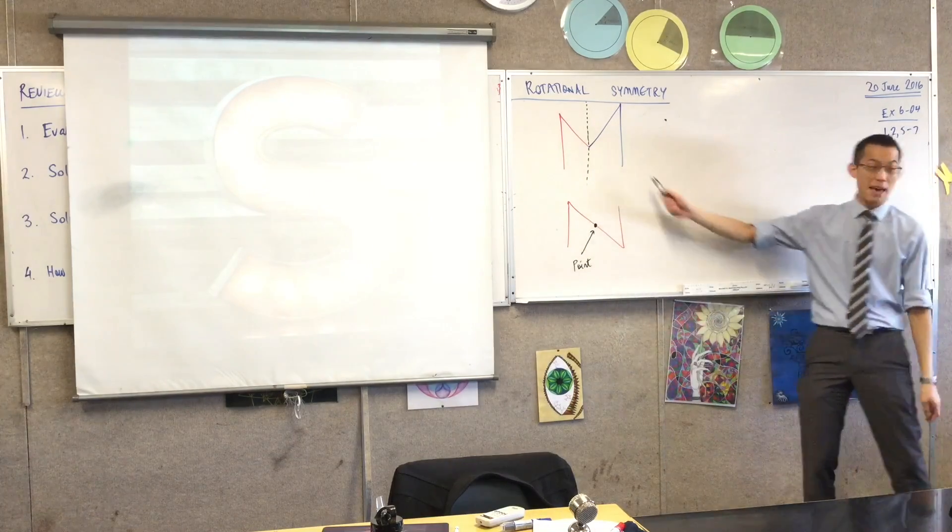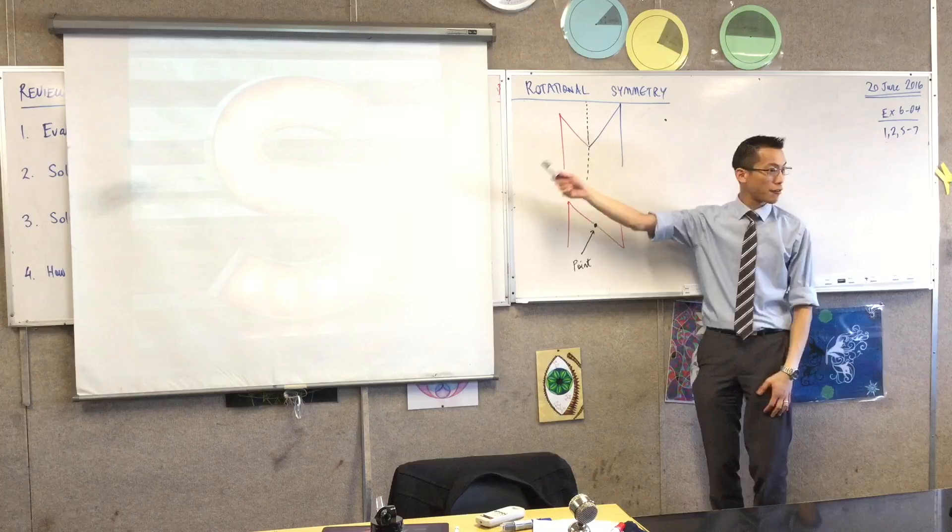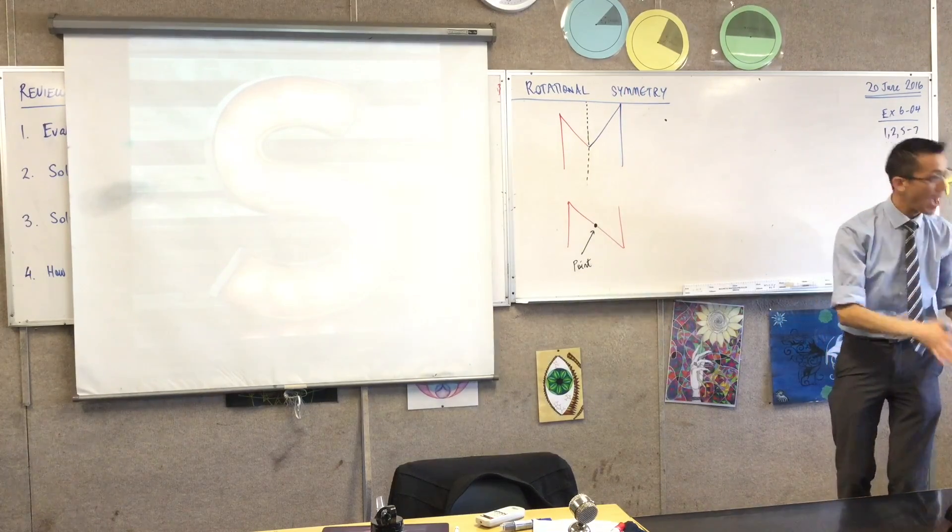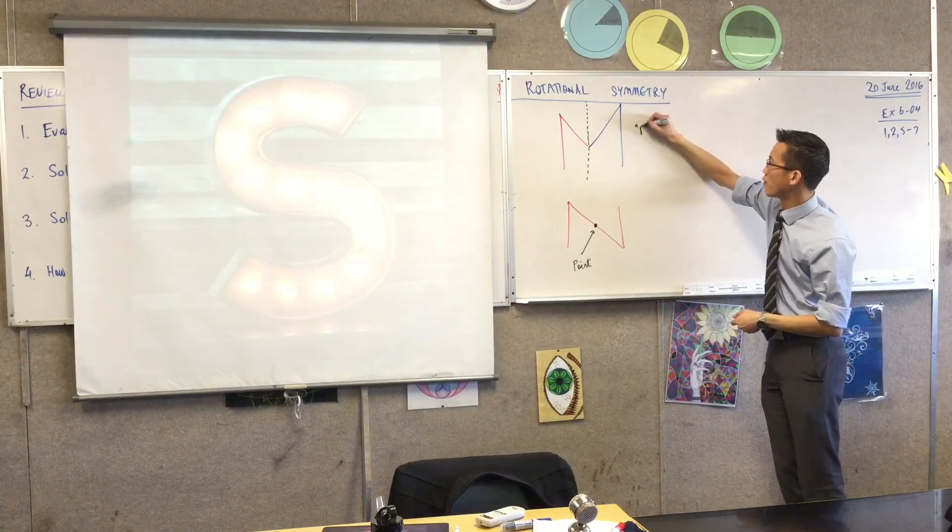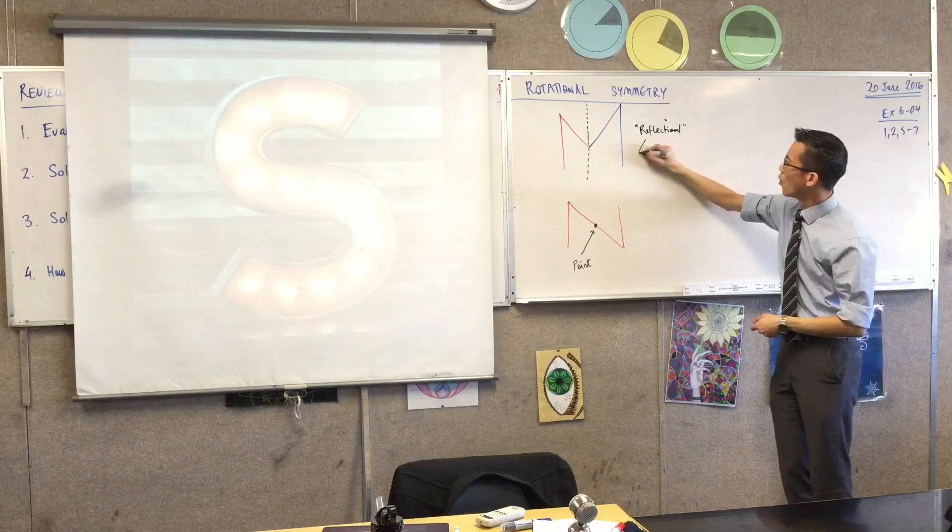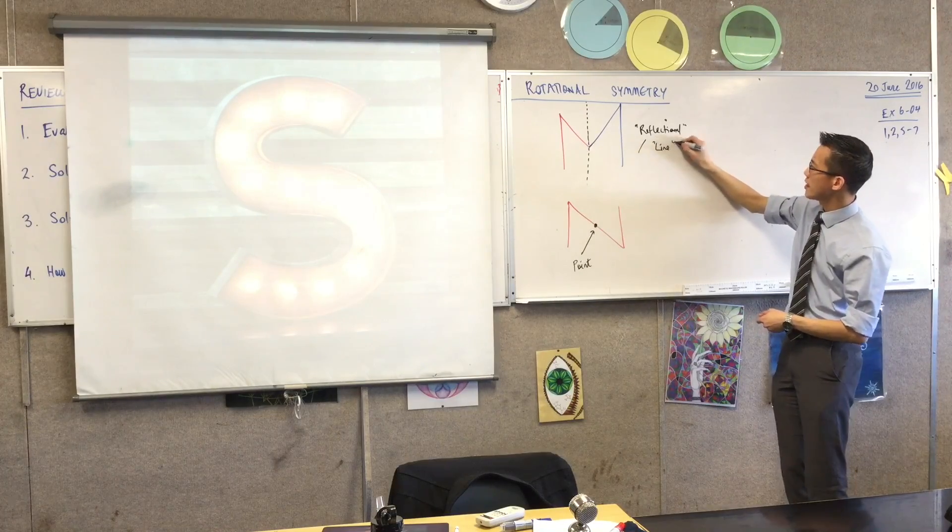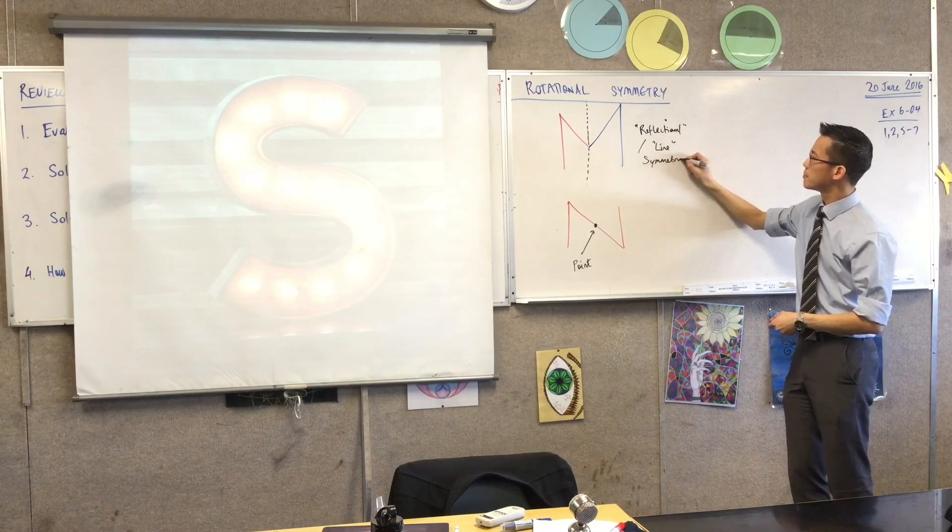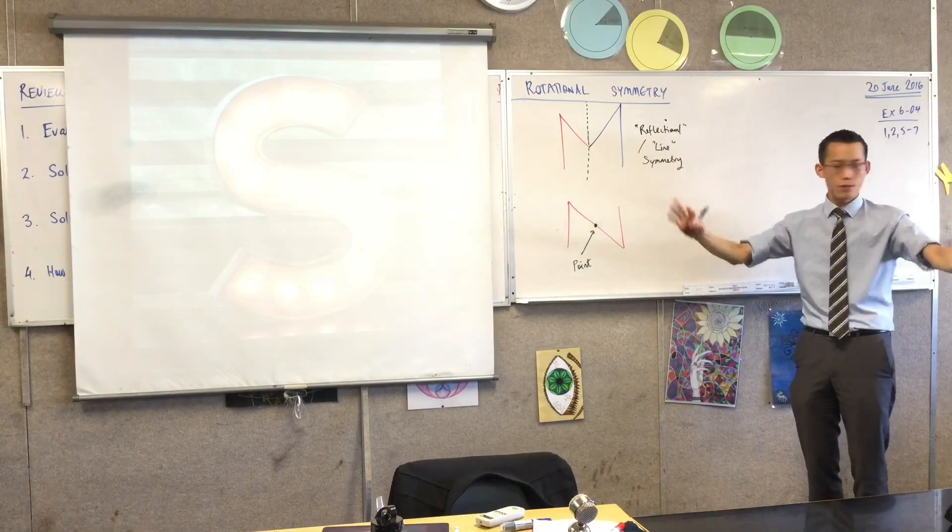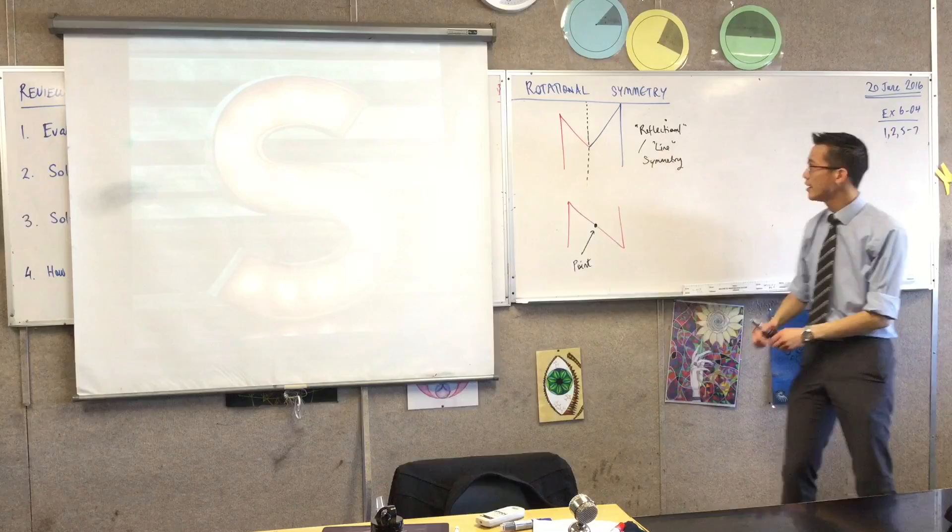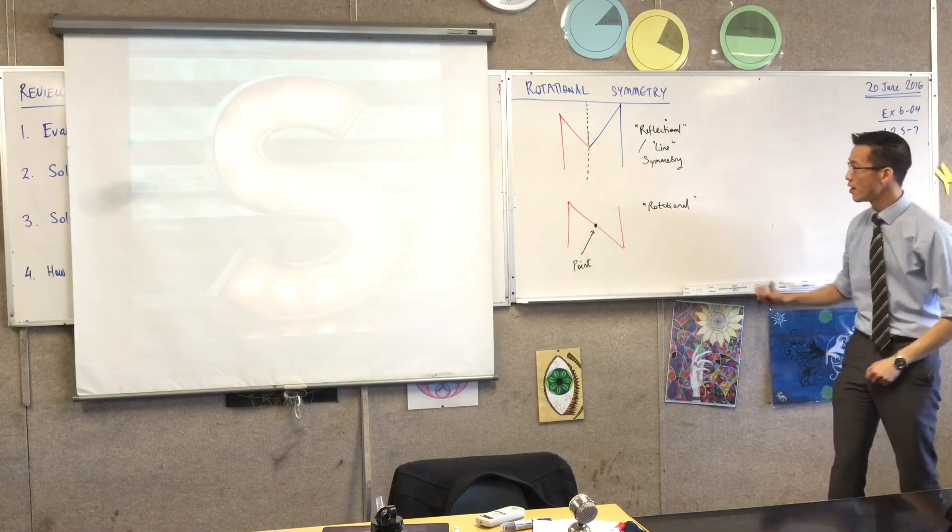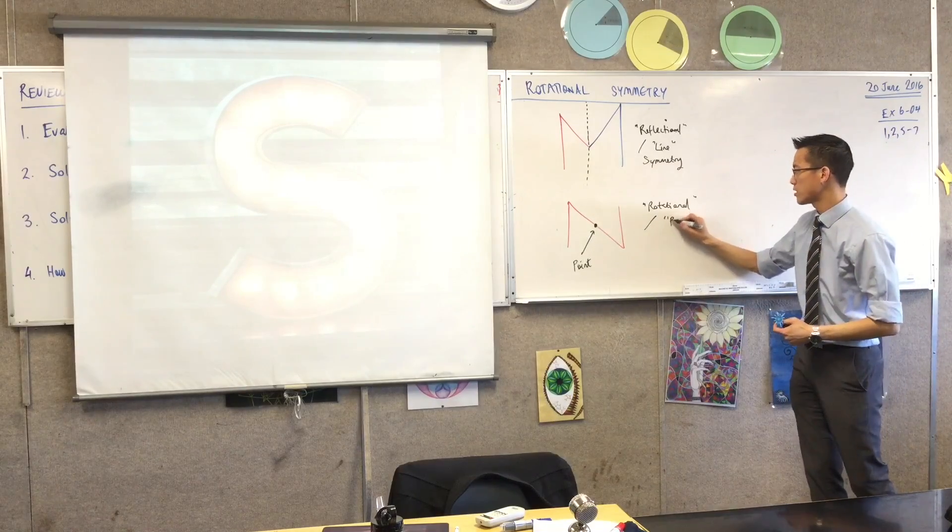Now, because this N here, right, the N that I drew by accident, this is reflectional symmetry, but it's across a line. So that's why you might remember that you've already called it line symmetry. This is reflectional or line symmetry. Whereas this guy here, it's not about a line at all. No line's required. It's just a point. So we call this rotational symmetry, because you have to spin it around, or because it's about a point, we also call it point symmetry.